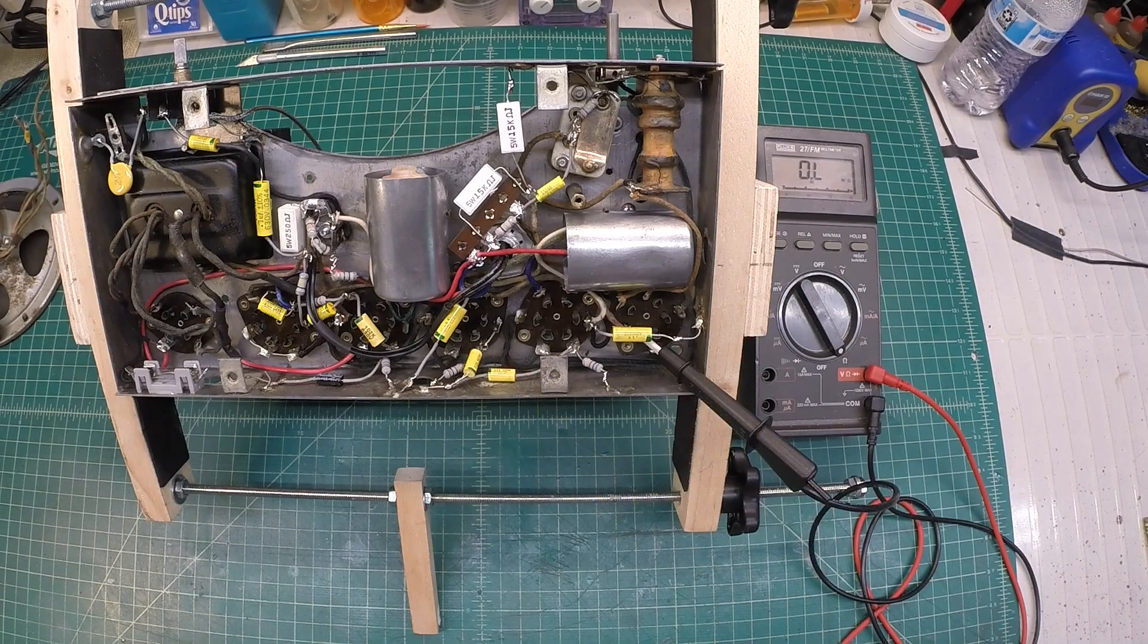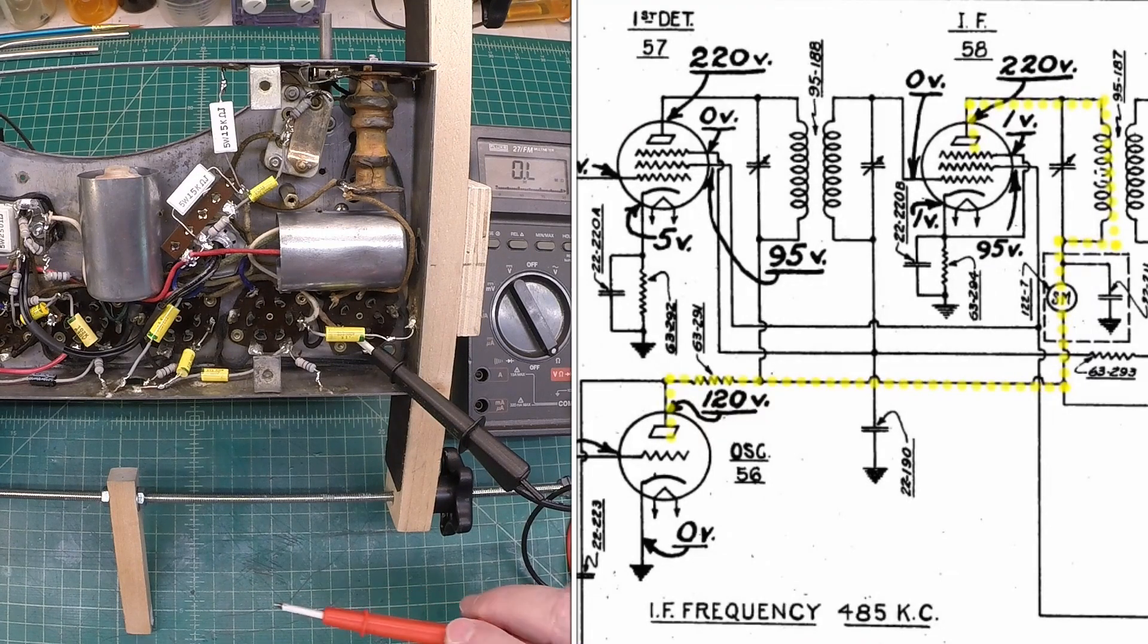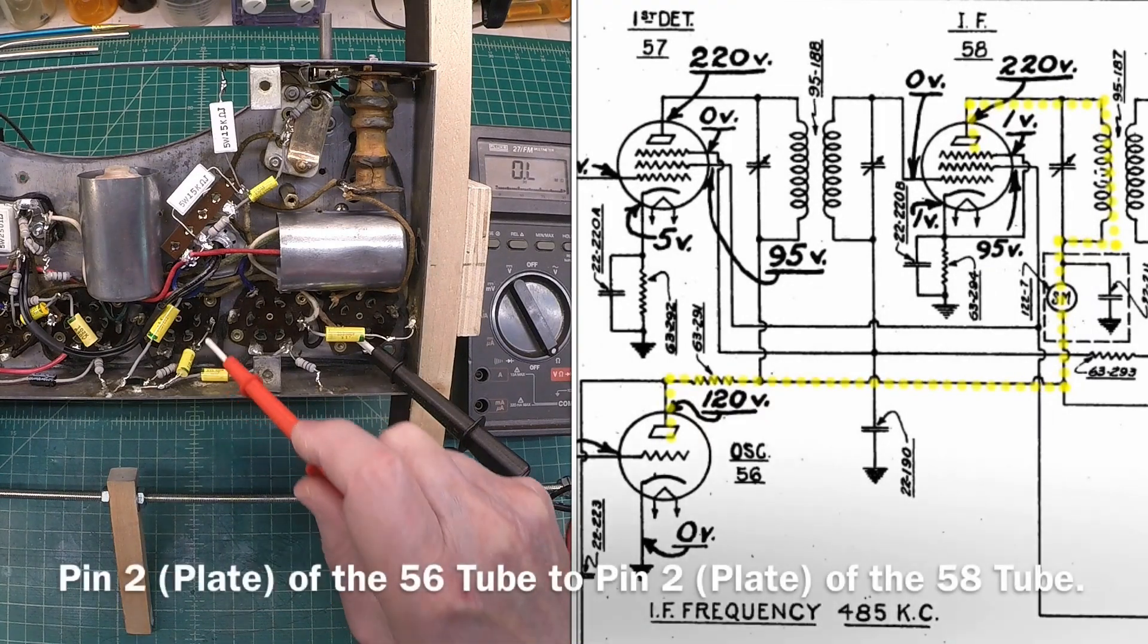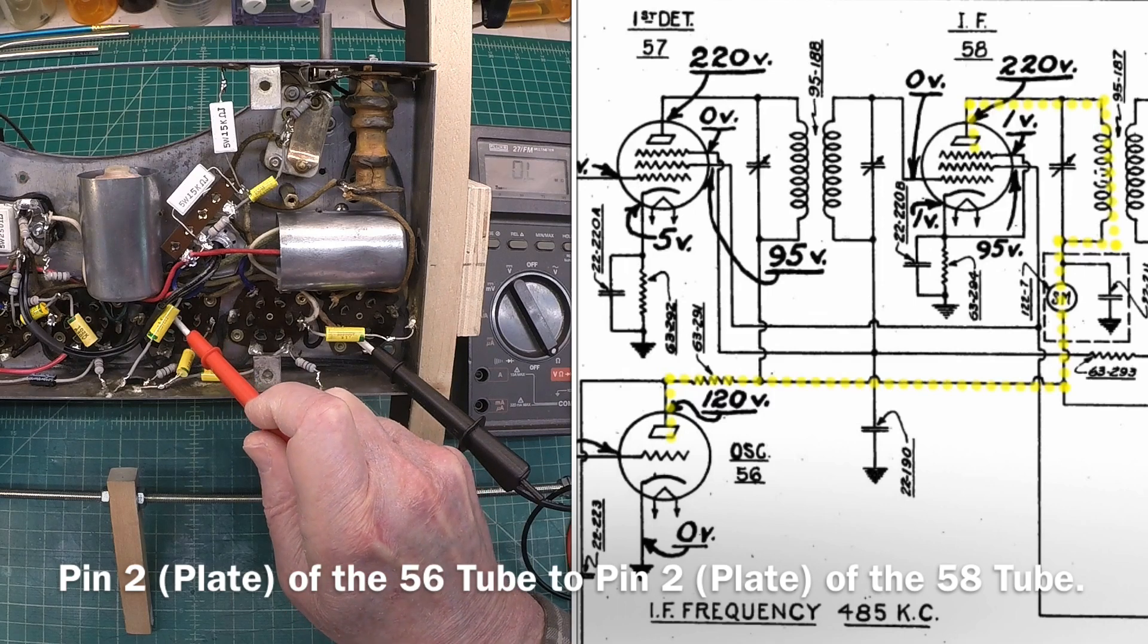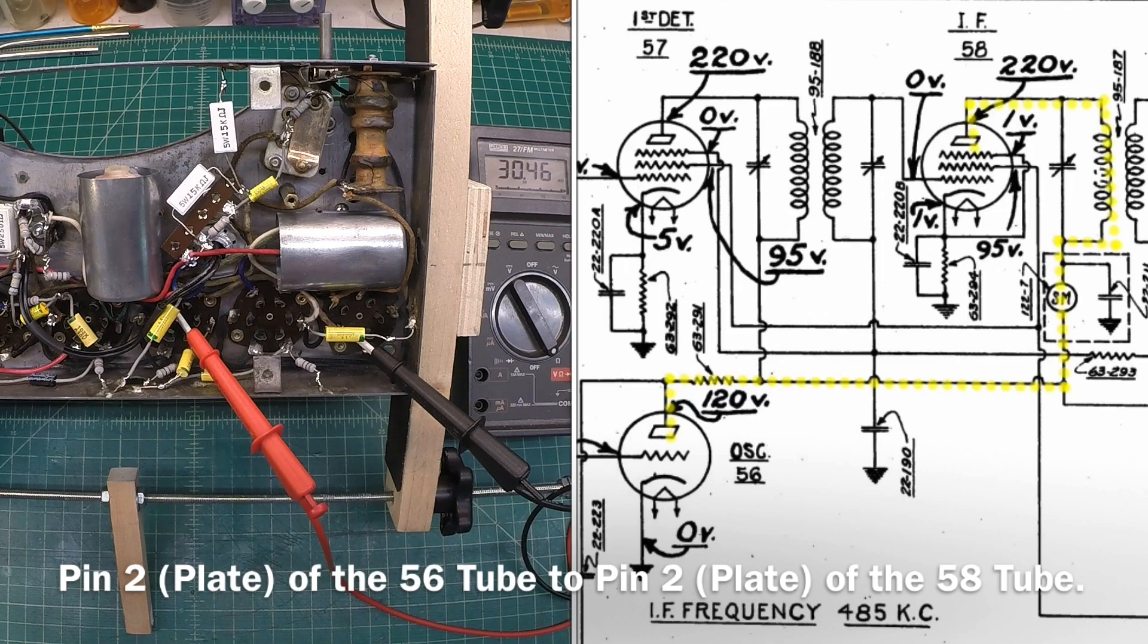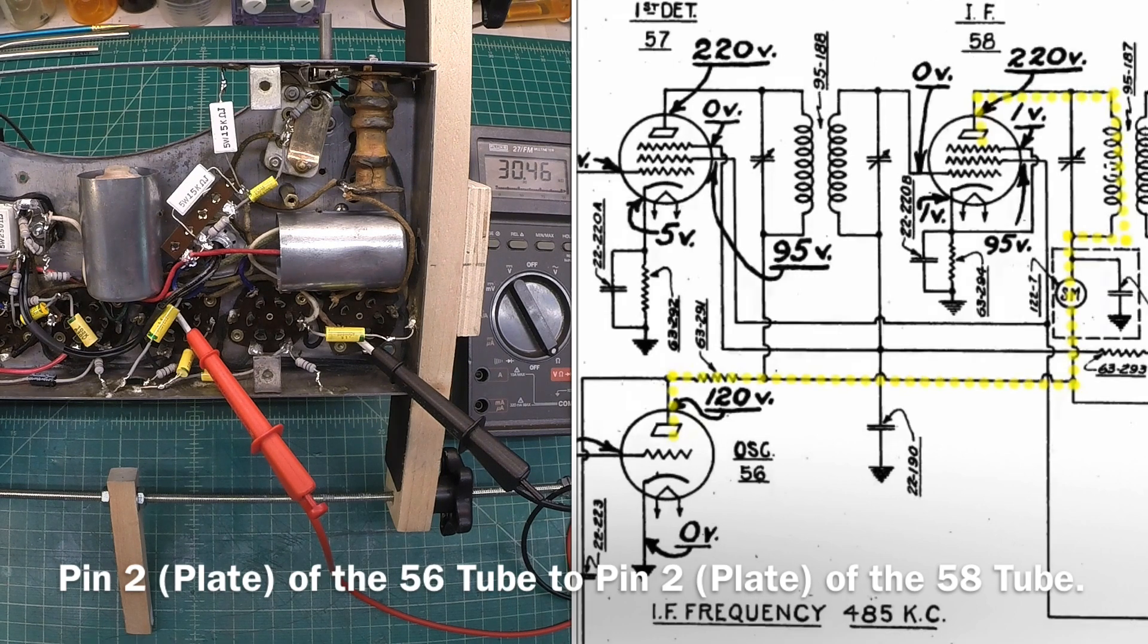Let's check resistor 63-291 and we'll go from the plate of the 56 to the plate of the 58 and you can see we're reading about 30.4k. We're going through the IF transformer as well. That's only about I think 12 ohms of DC resistance. So that resistor is good. It's called out on the schematic at 29k and I replaced it with a 30k.